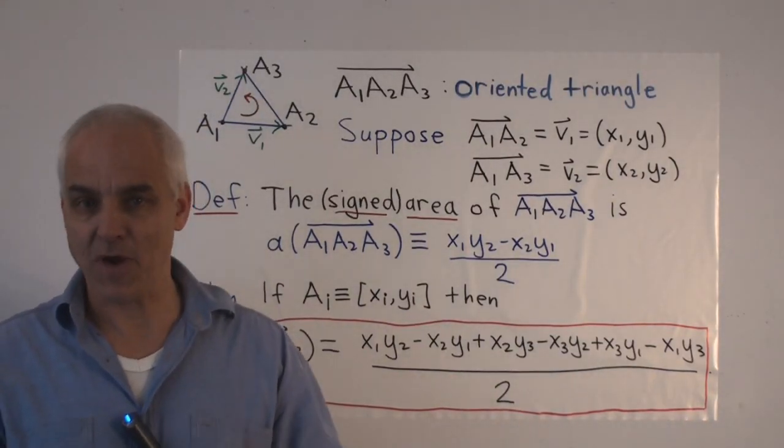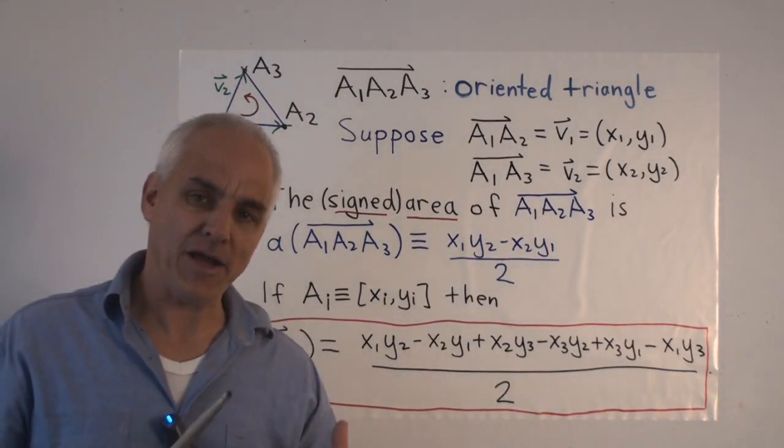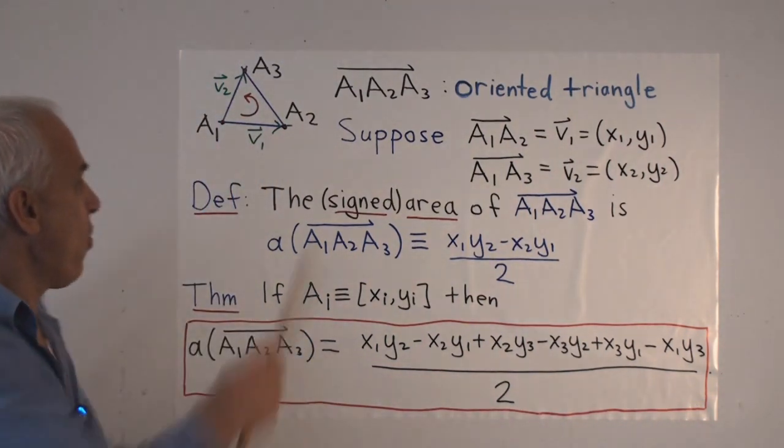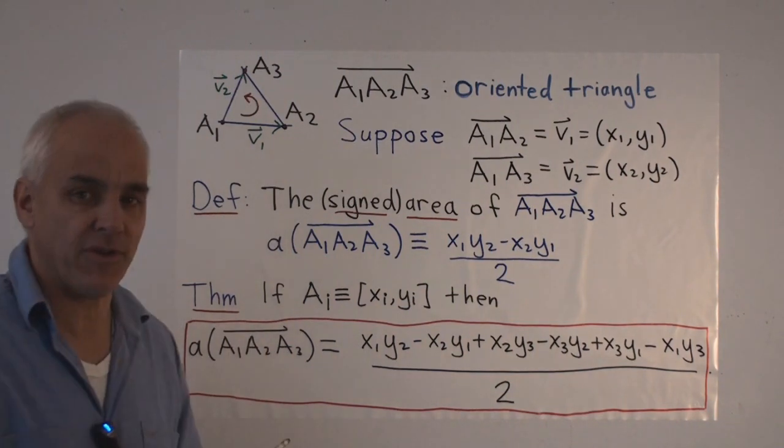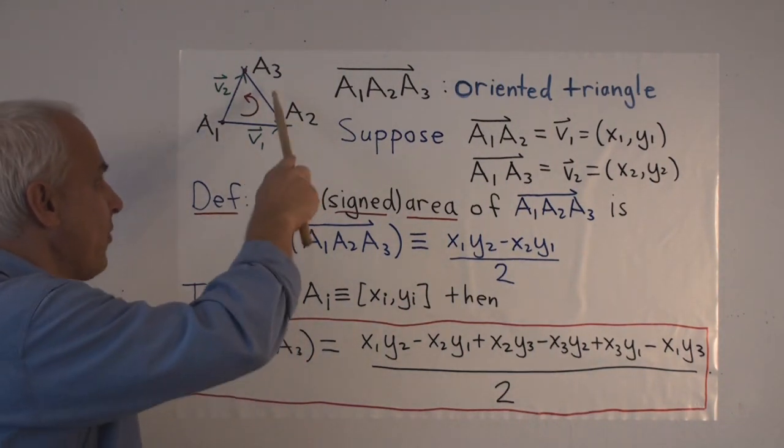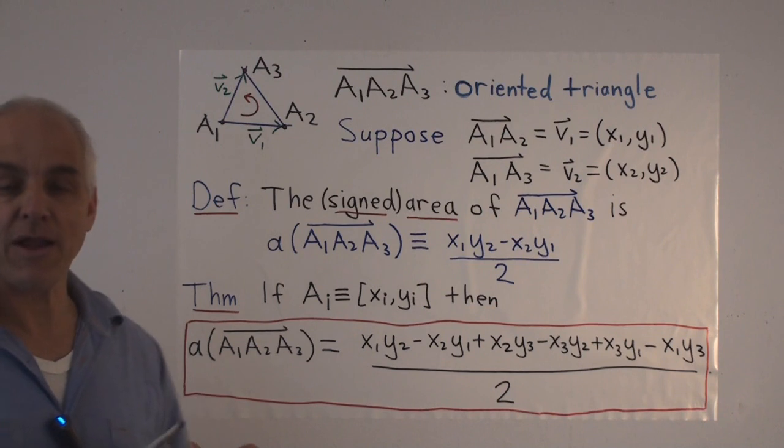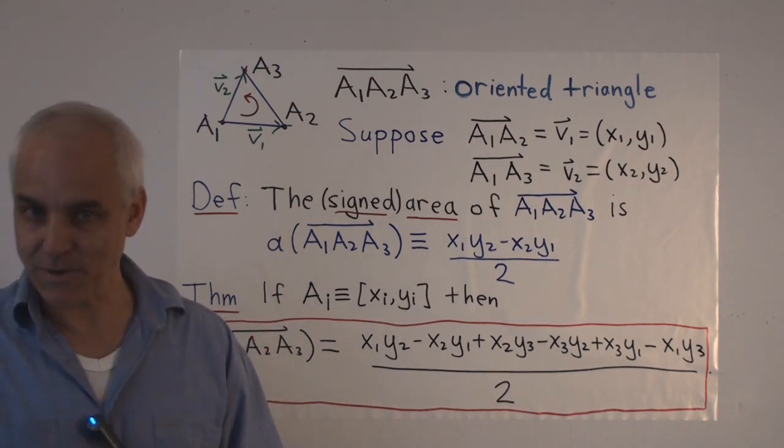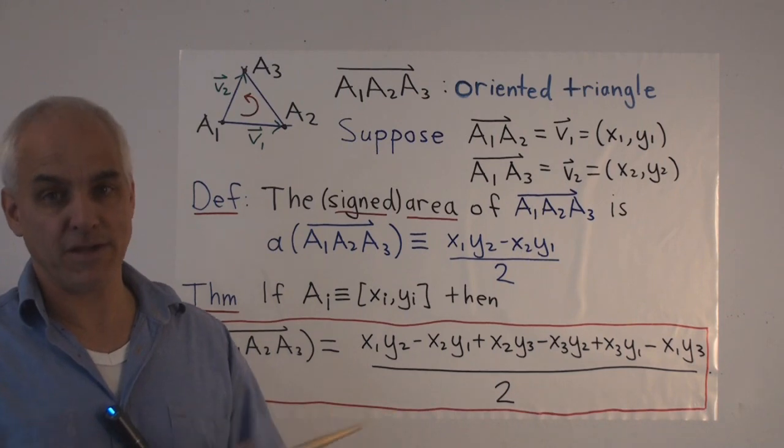Okay, so what is an oriented triangle? Well, it is a triangle together with an orientation, which means we choose a way of going around the three vertices. We can either go around this way, or we can go around this way. So a triangle has two possible orientations, and if we choose one of those possible orientations, we get what's called an oriented triangle.